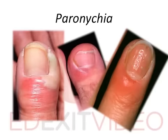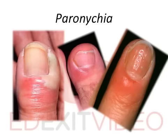Paronychia. Paronychia is a soft tissue infection around a fingernail. Paronychia occurs in two forms, acute and chronic. The etiology, infectious agent, and treatment are usually different for each form.